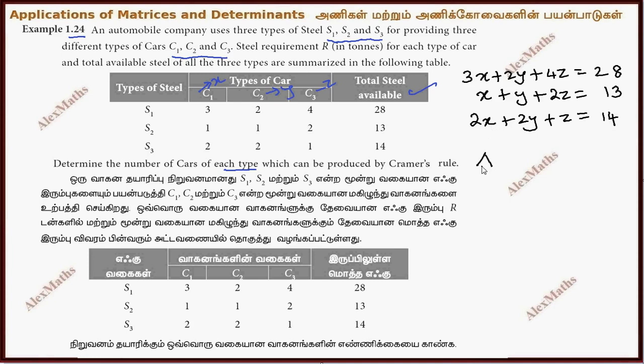This is delta. Delta is equal to the coefficients: 3, 2, 4, 1, 1, 2, 2, 2, 1. Now let's calculate the value.